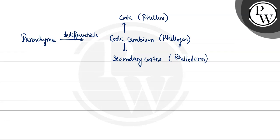Ab secondary cortex ke niche wali side present hota hai primary cortex. Uske andar present hoga endodermis. Usse next present hota hai pericycle. Ab pericycle se andar ab enter kar jaate hain into the intrastelar region.